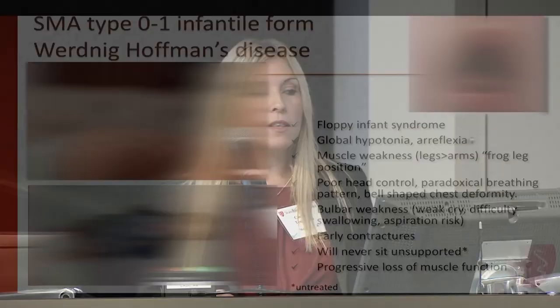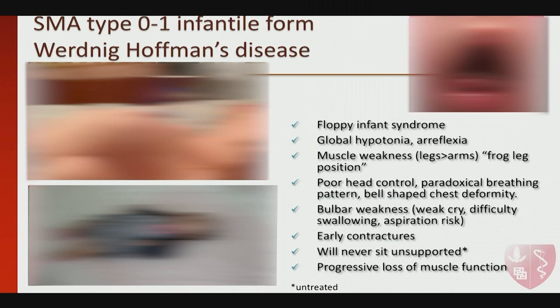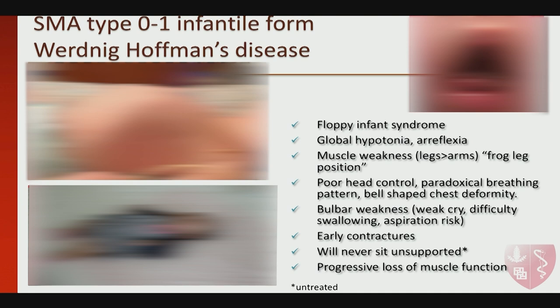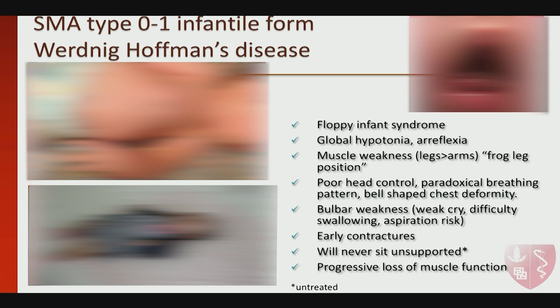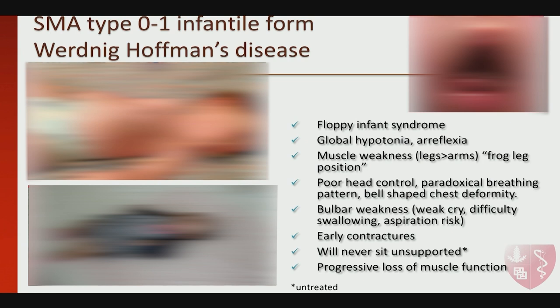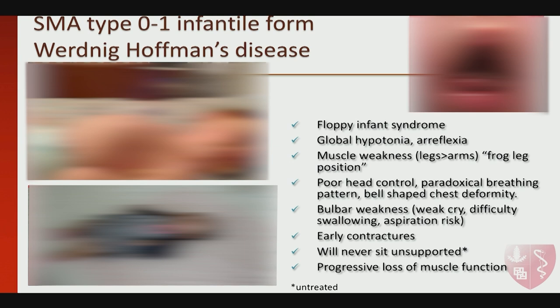Here are classic findings that raise consideration of SMA as a potential diagnosis. The first video shows a classic presentation of a floppy infant with characteristics very classic of SMA type 1: global hypotonia, areflexia on reflex testing, muscle weakness more manifested in the legs than the arms, and a frog-leg position.